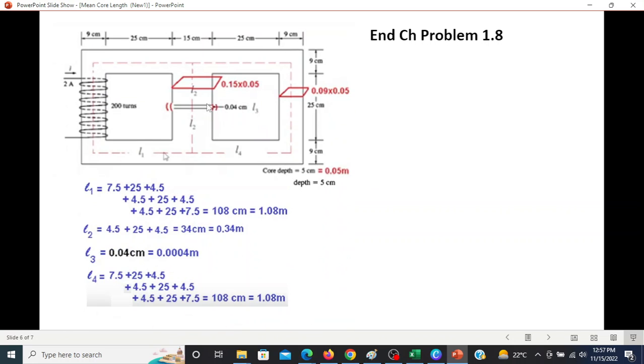Now the area of cross section, we can just draw here for our convenience. And we know it is 15 cm width divided by depth 5 cm. When converted into meter, it will be 0.15 multiplied by 0.05. Similarly, here the width is 9 cm, which can be written as 0.09 meter multiplied by 5 cm depth, that is 0.05 meter. So this is how you calculate the area.